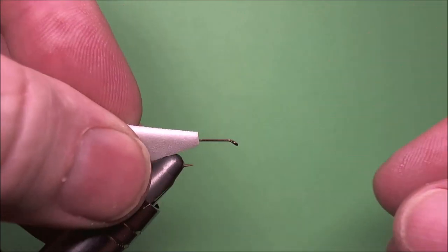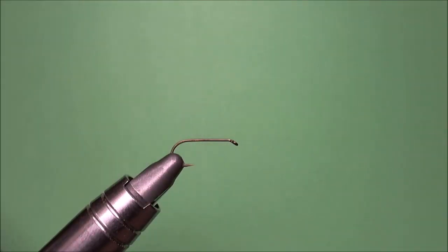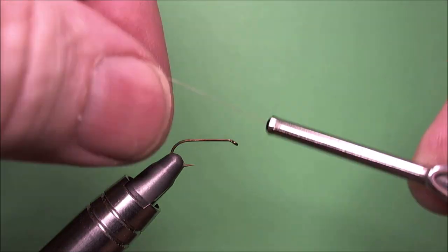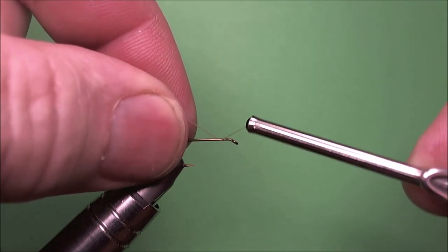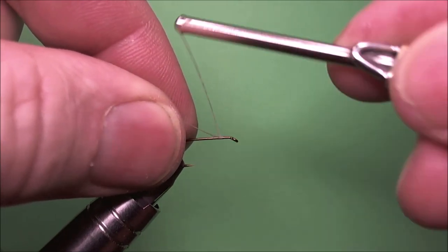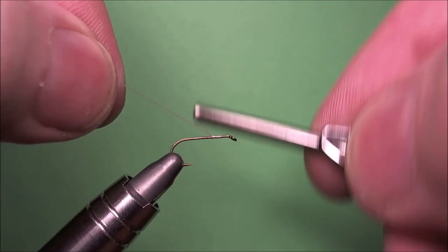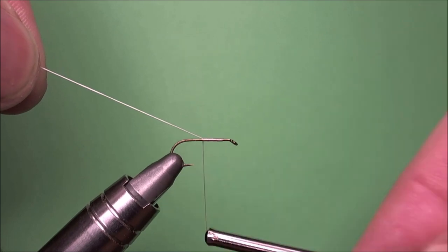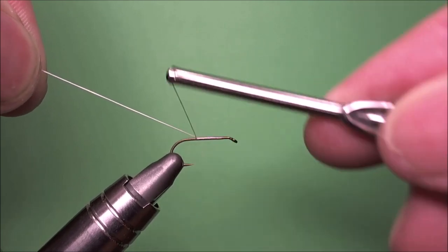And that's where we're going to tie it. We're going to tie it in back here. So first up, we're just going to lay down a base layer of thread touching turns all the way to the hook bend.